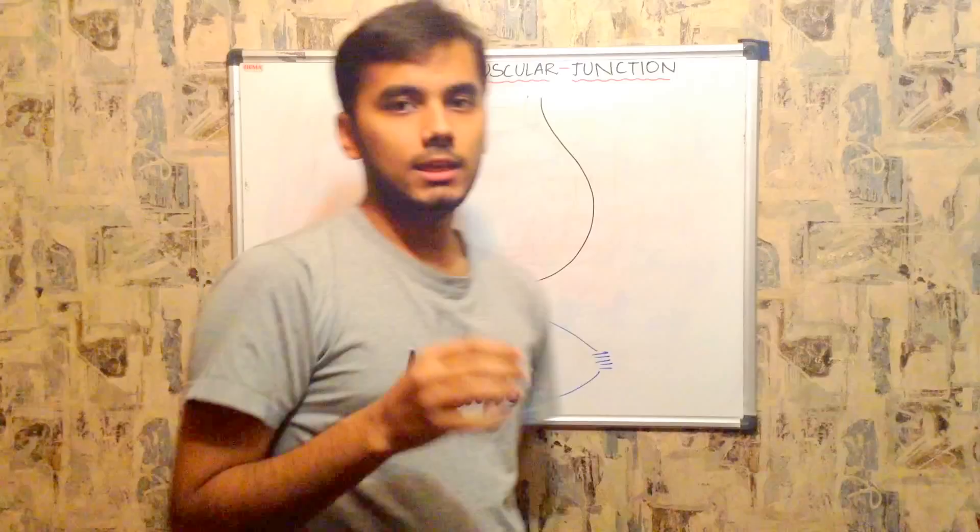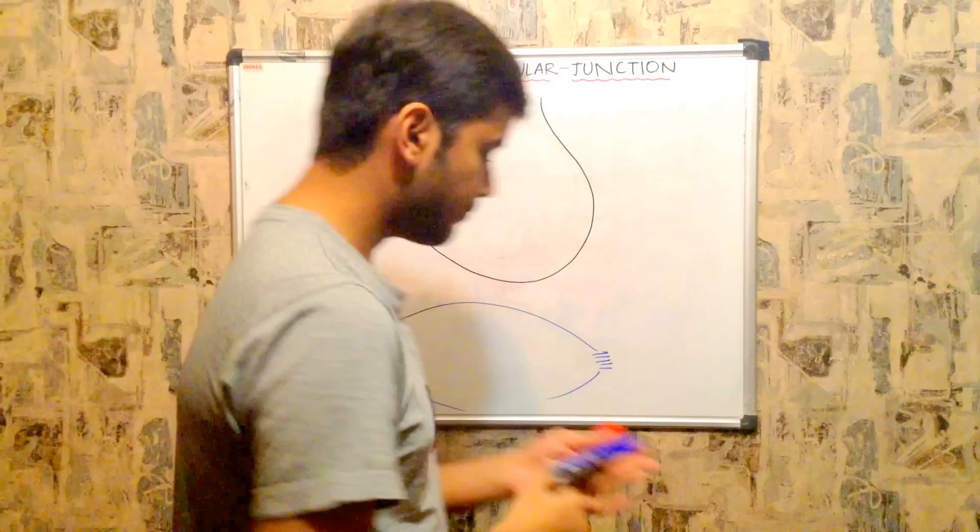The main neurotransmitter playing a key role in the entire mechanism of the neuromuscular junction is acetylcholine. First we need to know how acetylcholine is synthesized.